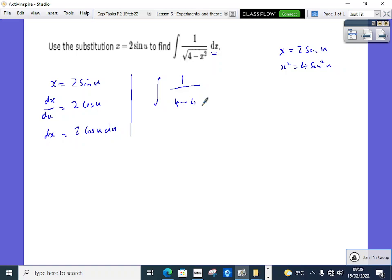Now, it's not by accident they used the 2 sine u. The reason why they've done that in this question is because you know that sin squared u plus cos squared u is equal to 1. And if I times everything by 4, then you've got 4 sine squared u plus 4 cos squared u is going to be equal to 4.